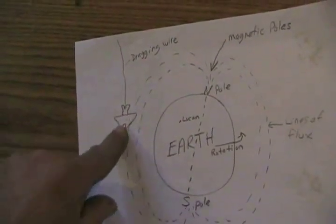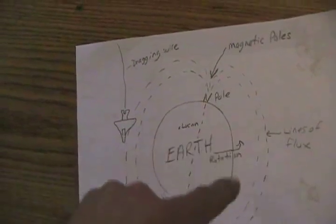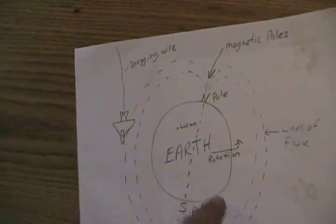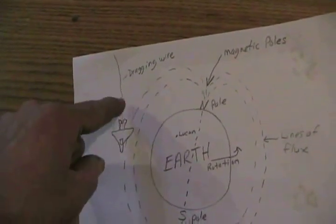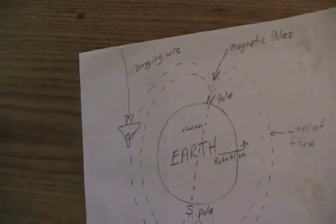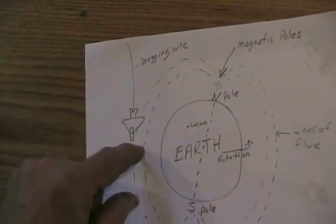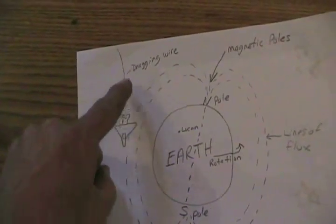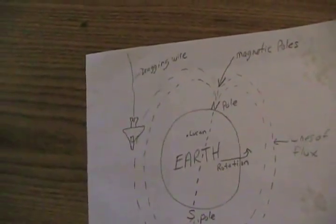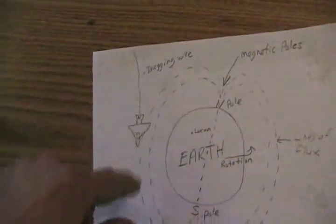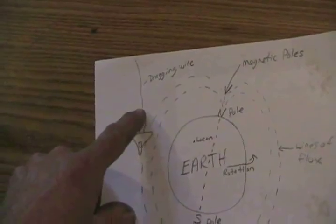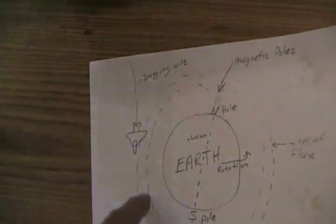Say for example, you are flying the space shuttle around the Earth through these lines of flux at whatever distance they are from the Earth, and you are dragging a big long wire behind it. The magnetism moves the electrons in that wire and creates a very high voltage, so just a piece of wire being dragged through this invisible field produces thousands, even hundreds of thousands of volts.